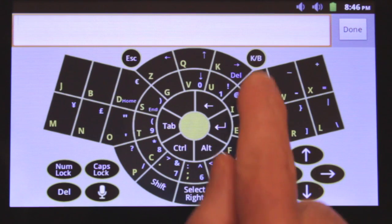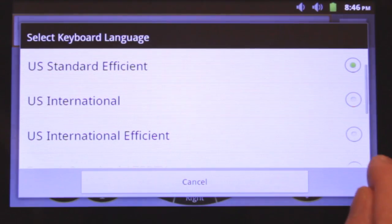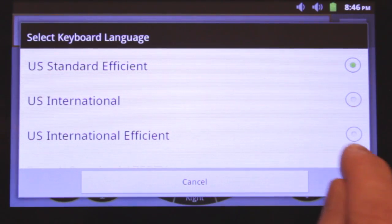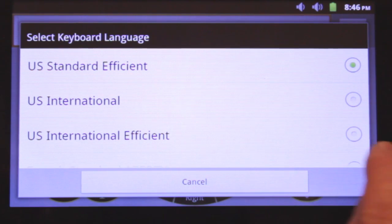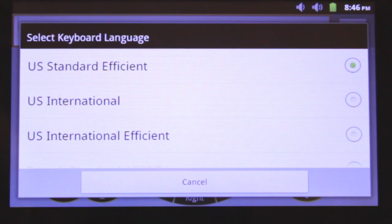If we look again at the available keyboard layouts, we can see that the third and fourth options listed are the US International and US International Efficient respectively. You can think of these layouts as being similar to the two keyboard layouts just described, but with the added benefit of providing access to various foreign alpha characters.